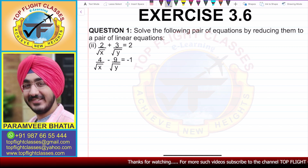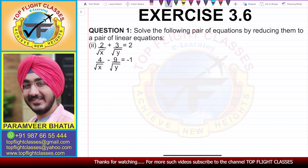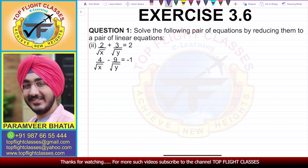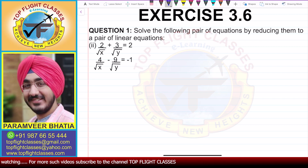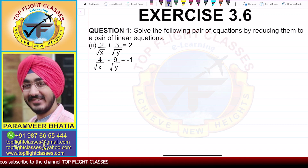The first equation is 2 by root x plus 3 by root y is equal to 2, and the second equation is 4 by root x minus 9 by root y is equal to minus 1. In this case you have two methods to solve the problem.